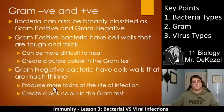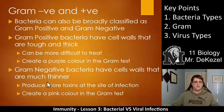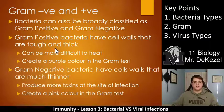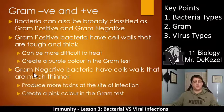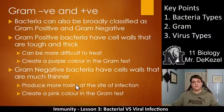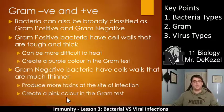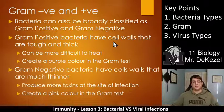Gram negative bacteria have cell walls that are much thinner, but the reason they are thinner is because they produce way more toxins at the site of infection and can be more dangerous in small amounts. So gram positive are tougher and harder to kill but less dangerous, while gram negative are easier to kill but very dangerous and produce lots of toxins. They create a pink color in the gram test.